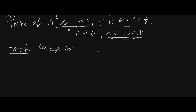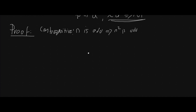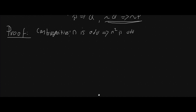Now we want to prove not q implies not p. Not q is going to be: n is not even, so n is odd. And we want to show that this implies n squared is odd — because n squared is not even means n squared is odd. This seems fairly easy. Well, it is, so we're just going to plug in.